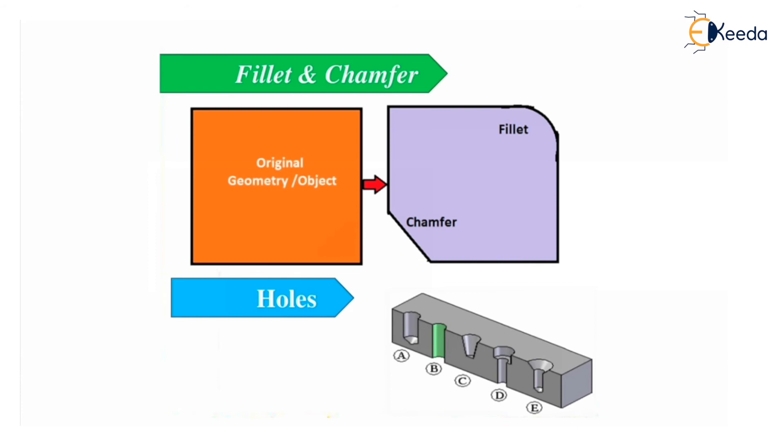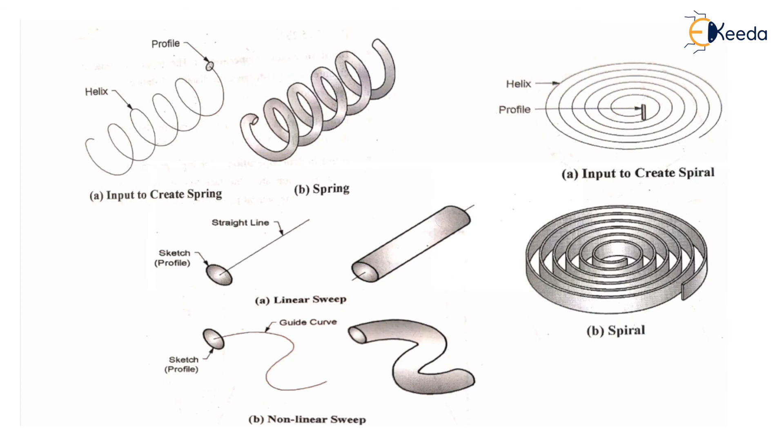Holes: there are different types of holes available, including through hole, countersink, and counterbore, then tap. All these different types of holes are shown in the figure. Then there is spring input with profile—a circle and profile are given, helix is given, that is also considered feature-based. Then spiral: there is a profile and helix, and spiral can also be created.